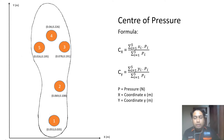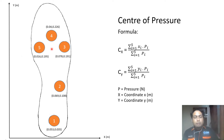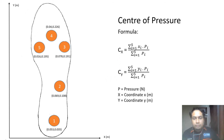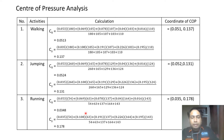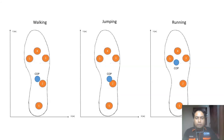From the three experiments, I use the data to calculate the center of pressure. The insole has FSR sensors at points 1, 2, 3, 4, and 5 with exact coordinates measured in meters. Using the center of pressure formula, I calculate the x and y coordinates for each experiment. From walking, jumping, and running, each experiment produces its own center of pressure, which can be used as a reference point for ACL patients during rehabilitation.